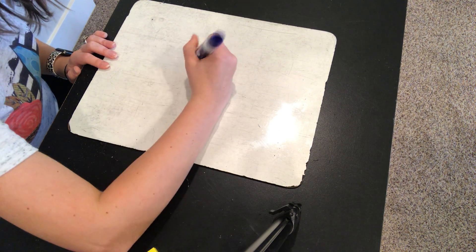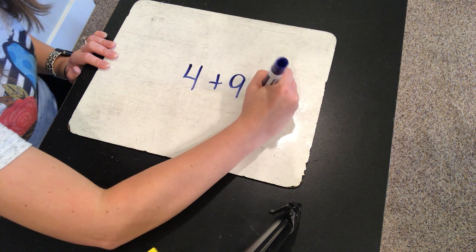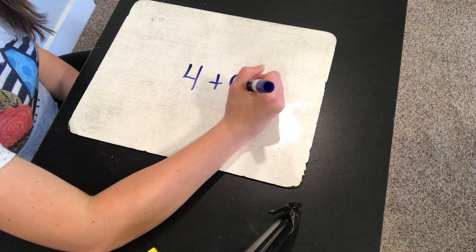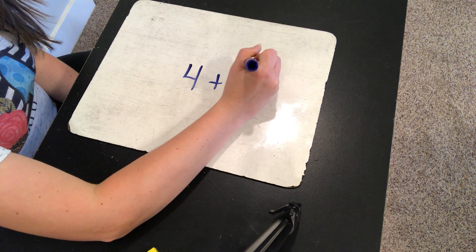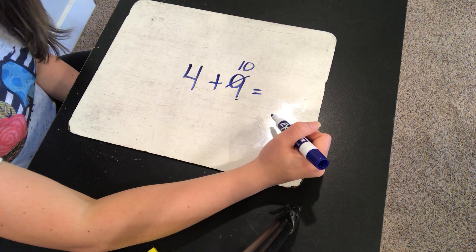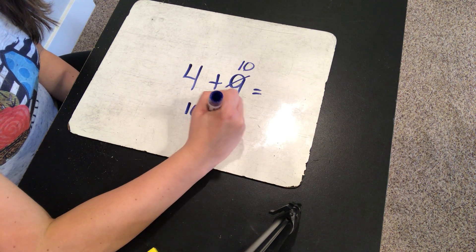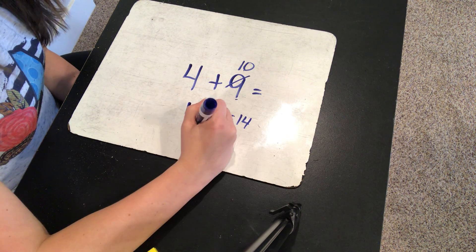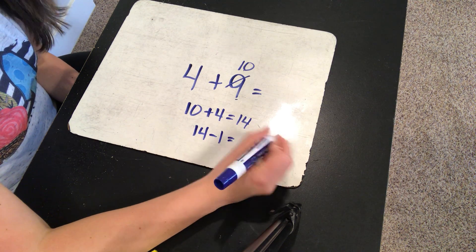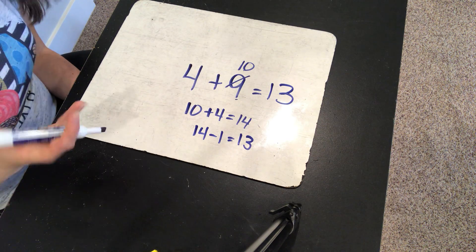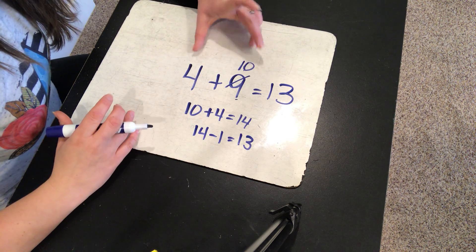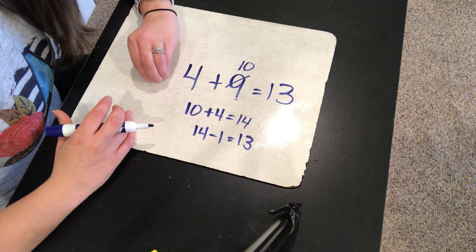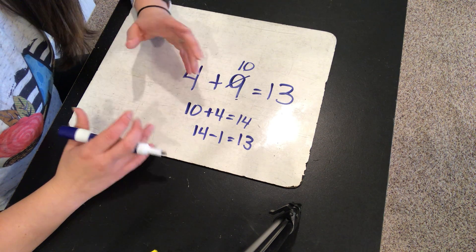How would you solve this problem? This is going to be the last one that we do for today. So 9 plus 4: if we make the 9 into a 10, we can solve 10 plus 4 really fast and easy. 10 plus 4 is 14, and then we take 1 away since we had to add 1. 14 take away 1 is 13. So there are several different ways you can go about solving these plus-9 math facts, but if you try to make it a 10, since 9 is very close to 10, just remember you have to take 1 back away to make sure that you get the correct answer.